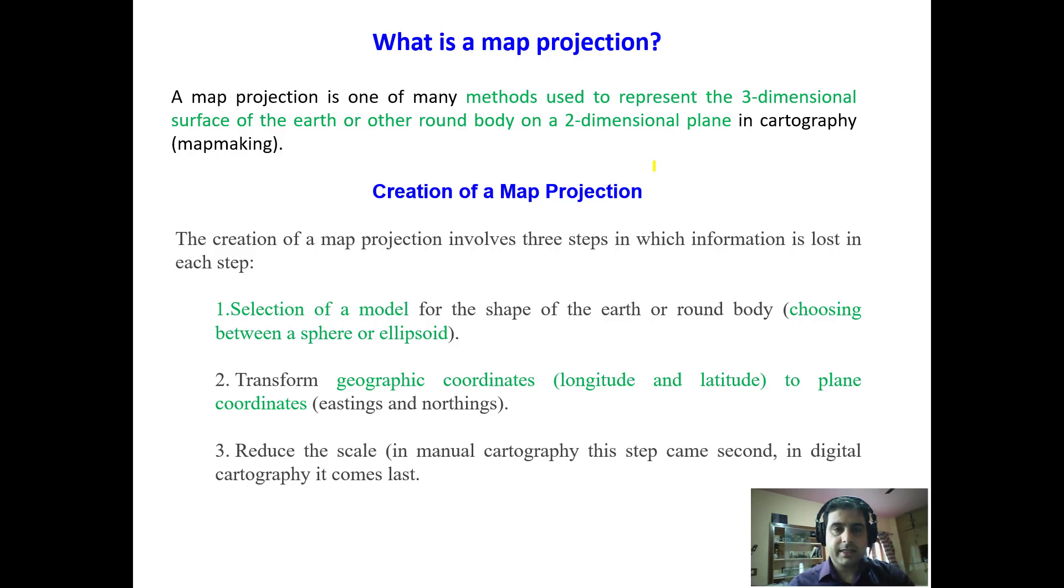Welcome back. Now we will study about map projection. By projection we mean to represent a three-dimensional surface in the form of a two-dimensional plane. So a map projection is one of the many methods used to represent the three-dimensional surface of the earth or other round body on a two-dimensional plane in cartography, that is map making.